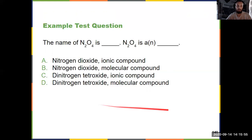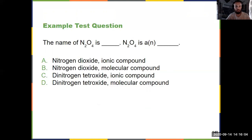Make sure you know all the different naming rules from 2.7, and again that continuation from 2.6 — how to predict if things are ionic or molecular. And that concludes chapter 2.